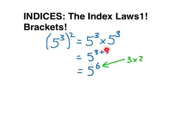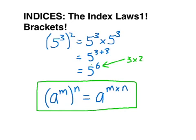So where brackets are involved, we simplify by multiplying the powers. So algebraically, we can see that A to the power of M all to the power of N will be A to the power of M times N. So we multiply the powers.